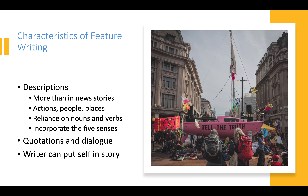So features — we'll talk about those first. You can get a bit more descriptive in features. They tend to be longer than a traditional news story, so we can add in more description and talk a little bit more about the people, the place, and the actions that are happening. We're relying a lot on our nouns and verbs, just like in our news stories, but we can incorporate a little bit more of the five senses — how things look, colors — we can bring in a little bit more style.